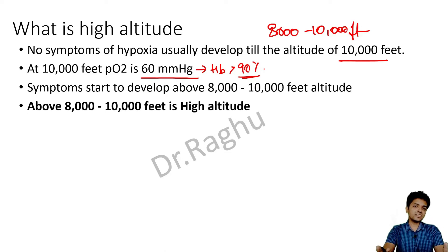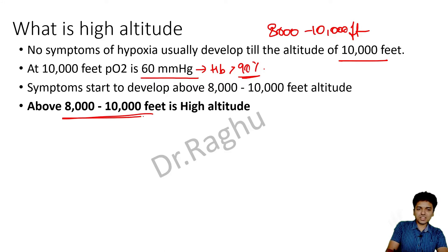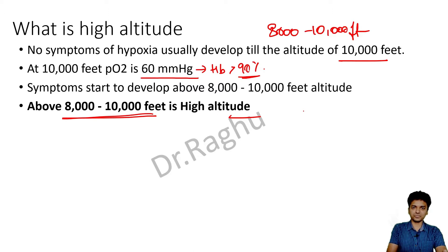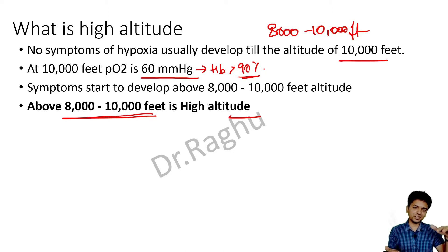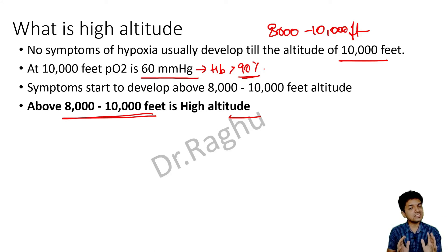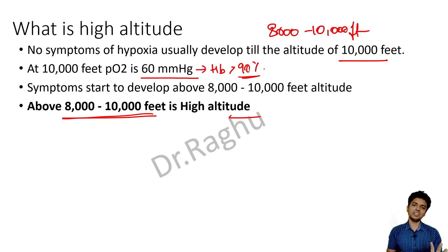So the definition of high altitude is anything more than 8,000 to 10,000 feet. Symptoms start to develop above this threshold because, up to 8,000–10,000 feet, partial pressure of oxygen is still maintained at 60 mmHg, equivalent to hemoglobin saturation of more than 90%, so the person won't develop any symptoms.